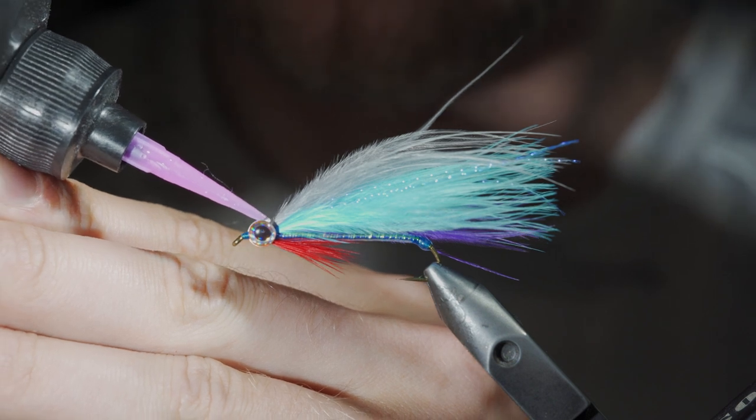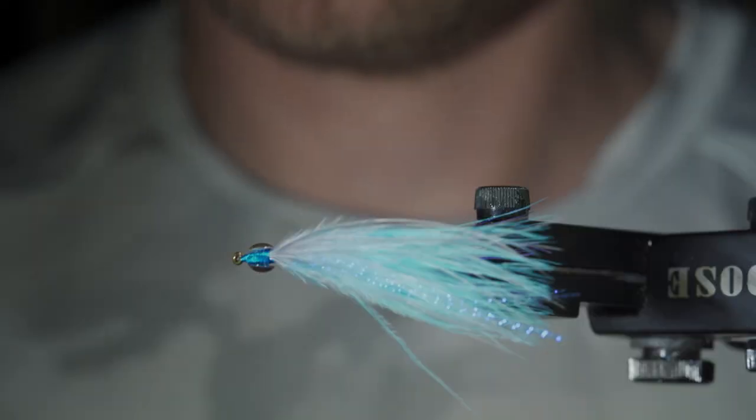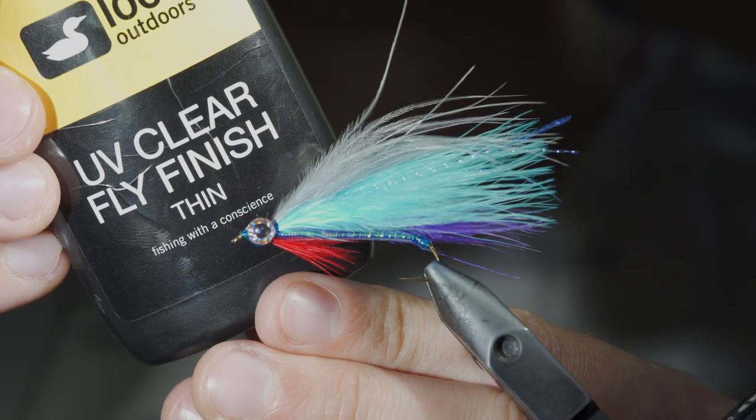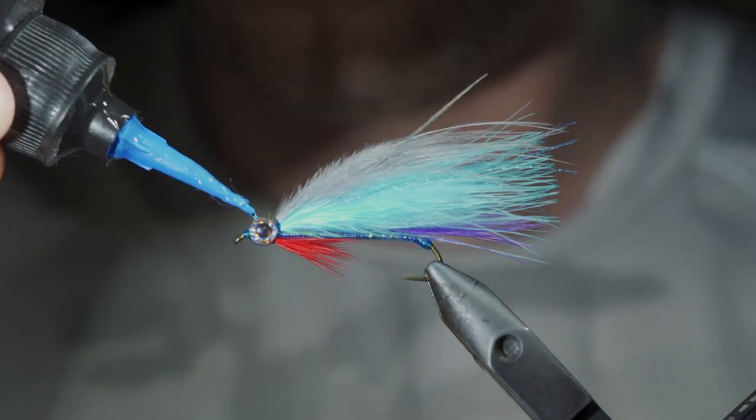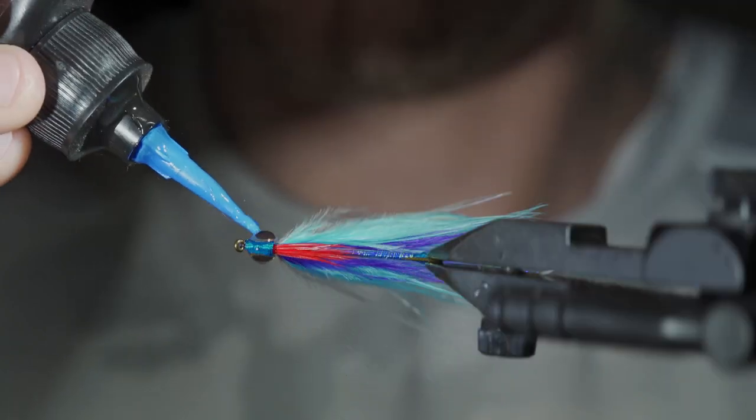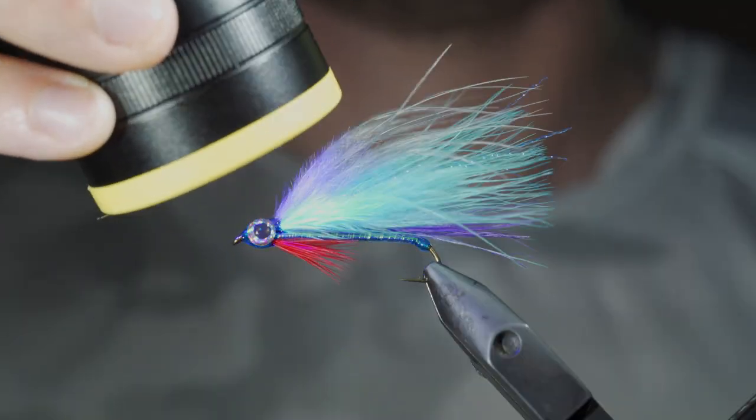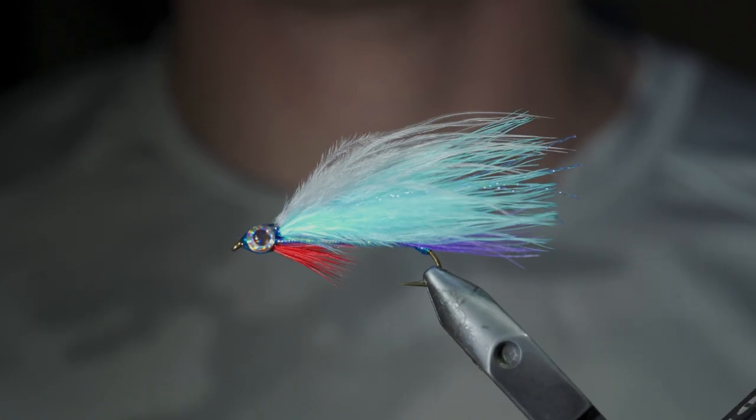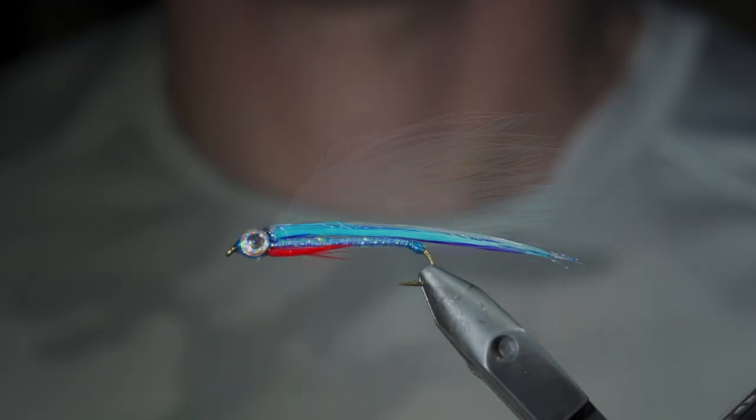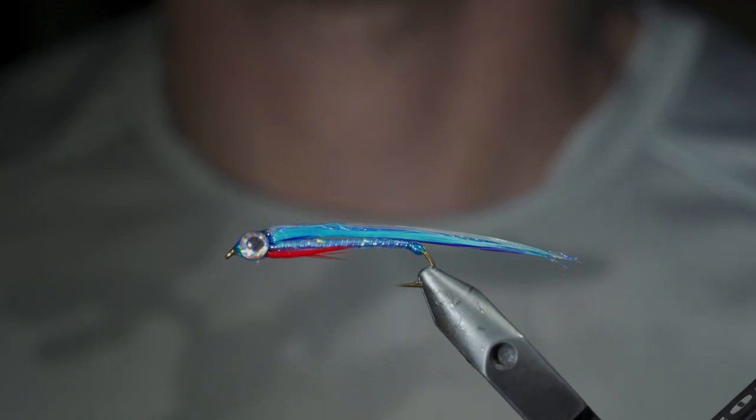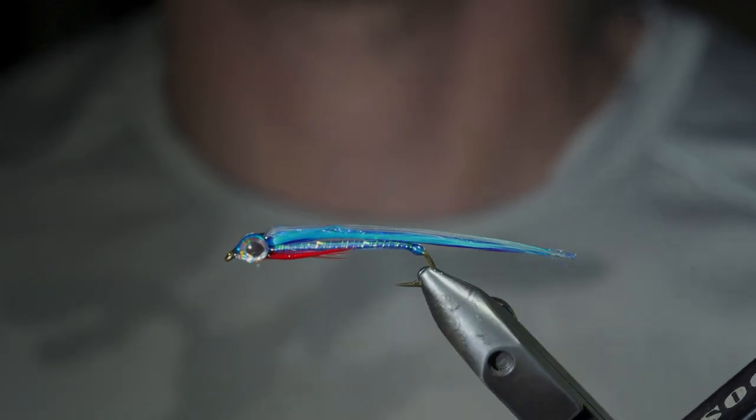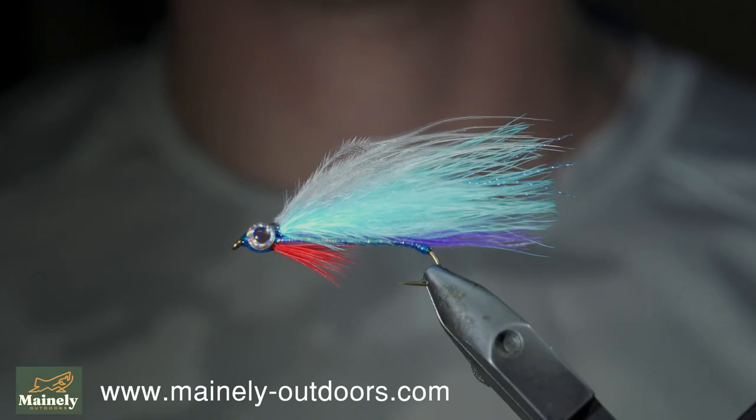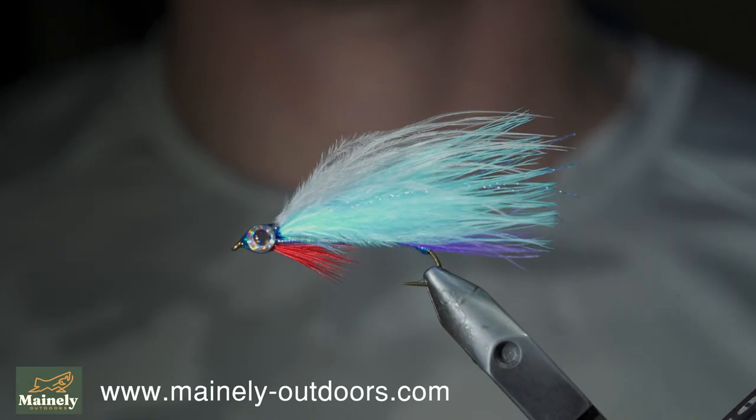We'll then fill in the gap with some UV resin to add some extra security as well as round off the head. Fix in place with the UV light and this is an ice smelt. A pattern I like to use here in Maine to catch salmon and brook trout. However, the marabou provides great action. And swapping out the colors, you can use it to represent any bait fish. Thank you for watching, subscribe for more, and I will see you in the next one.